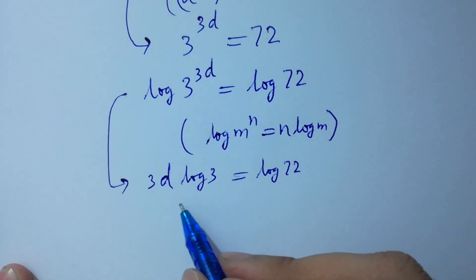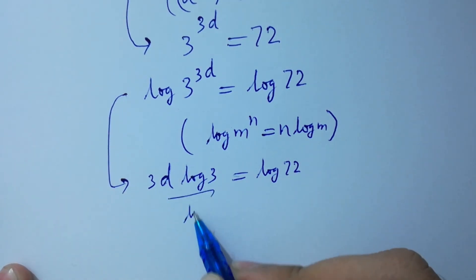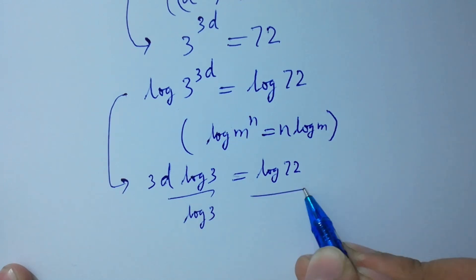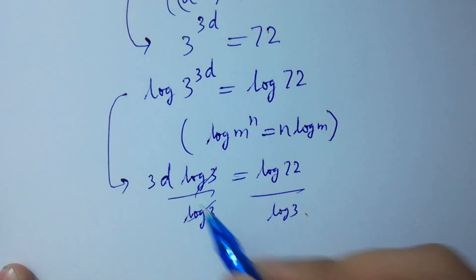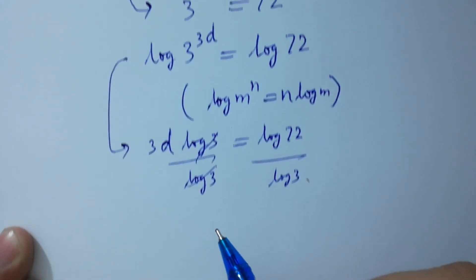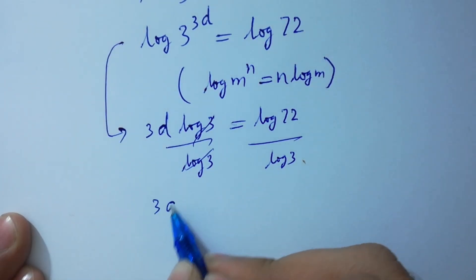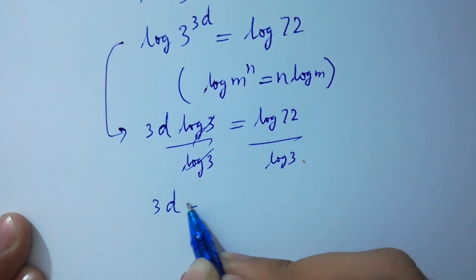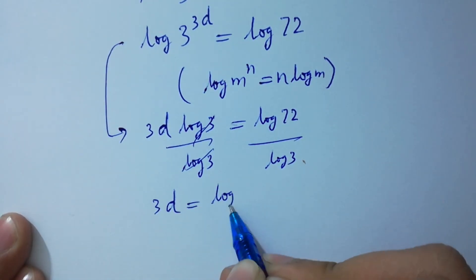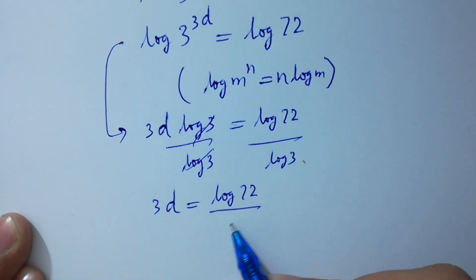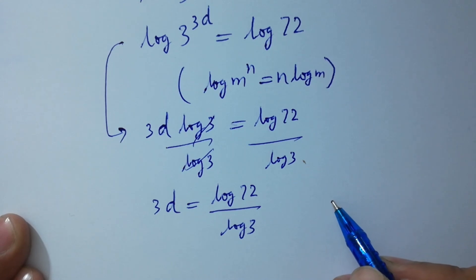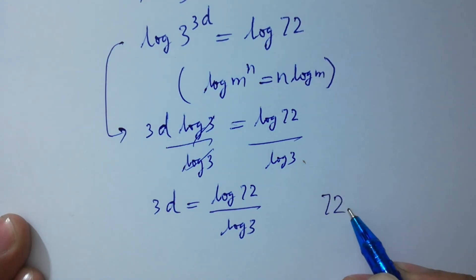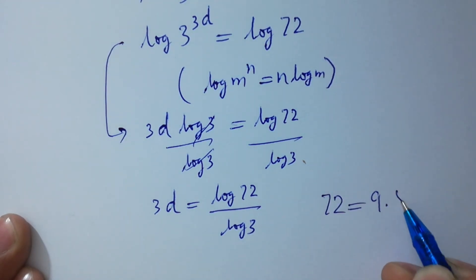Divide by log 3 on both sides. Log 3 and log 3 will be cancelled, so 3d equals log 72 over log 3. Since 72 equals 9 times 8,